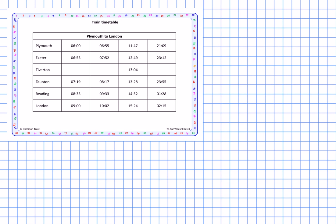You should also notice that all the times are listed in the 24-hour clock, otherwise known as military time. For example, everything after one o'clock is printed as 1304, 1328, 1452, 1524. Now, one immediate question is: why do you think train timetables use the 24-hour clock and not the AM/PM system?